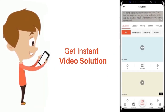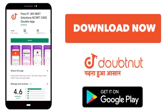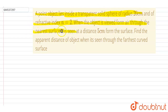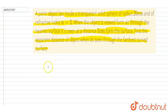A point object lies inside a transparent solid sphere of radius 20 centimeter. The refractive index is n equals 2. When the object is viewed from air, the nearest surface is seen at a distance of 5 centimeter from the surface. Find the apparent distance of the object when seen through the farthest surface.